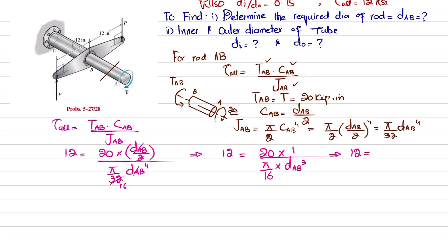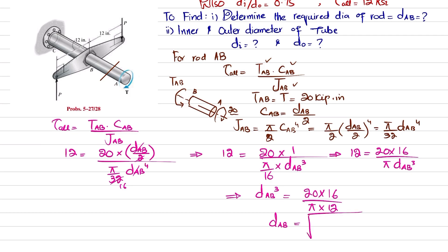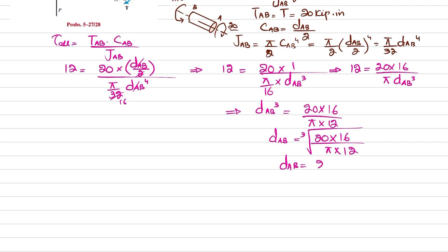So 12 = (20 × 16) / (π · d_AB³). Solving for d_AB³: d_AB³ = (20 × 16) / (π × 12). Taking the cubic root using a scientific calculator gives d_AB = 2.04 inches. This is the diameter of the rod.